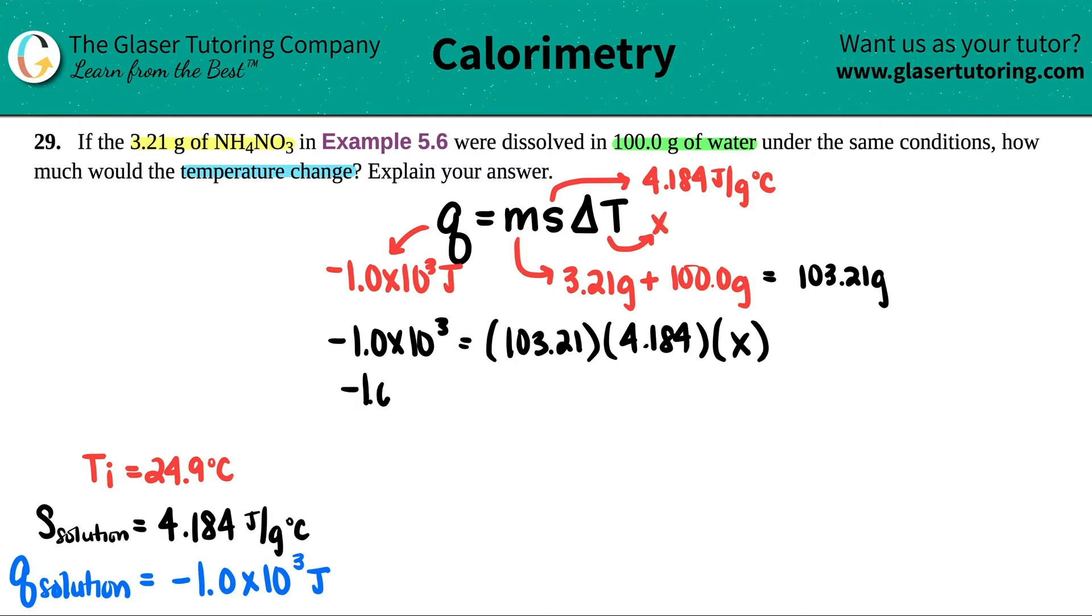So negative 1.0 times 10 to the third equals whatever these two numbers are multiplied together, 103.21 times 4.184. I get 431.8 times X.